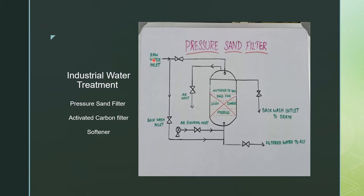Raw water from the pump house enters the PSF top through a bell mouth or distribution liner arrangement, distributes equally, and flows through the packed bed. Algae, suspended solids, organic matter, and microorganisms are filtered out. When the delta P between inlet and outlet exceeds 1 bar or 1 kg/cm², or once in 24 hours, the PSF is taken for backwash. The schmutzdecke also forms on the inner walls and in the activated carbon filter, strong acid cation unit, and softener.